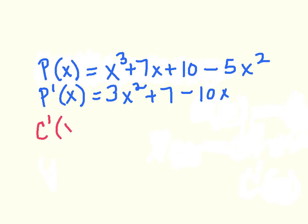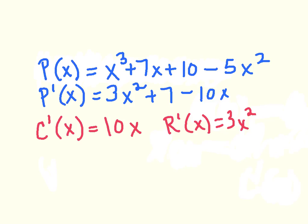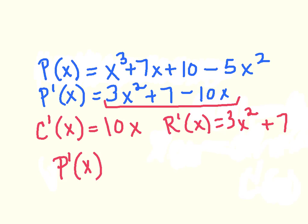The derivative of our cost function is 10x, and the derivative of our revenue function is 3x squared plus 7. Notice how they come together to find the derivative of our profit function. Our question also asks to find all values of x where our marginal profit is 0. That means we need to take our marginal profit function p prime of x, set it equal to 0, and find those values. We will do this using Excel.